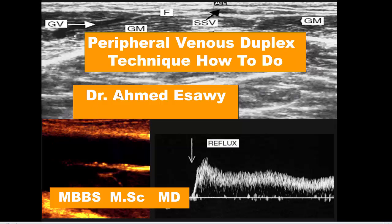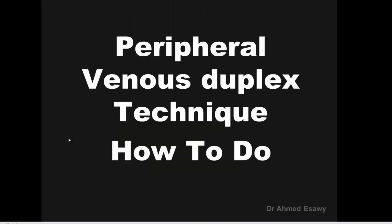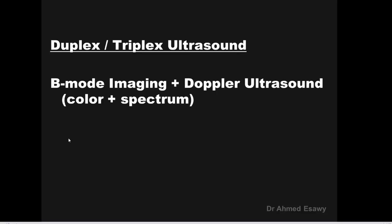Peripheral venous duplex technique — how to do it — is our subject in this lecture. What is meant by duplex or triplex ultrasound? It means three things: B-mode imaging, Doppler ultrasound including color Doppler, and spectral Doppler ultrasound. Together, these are called triplex ultrasound.